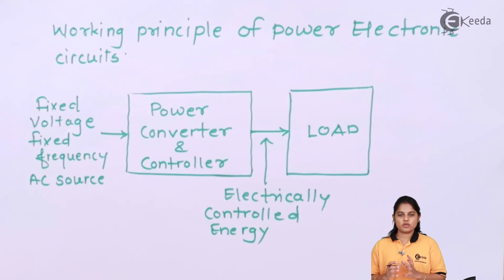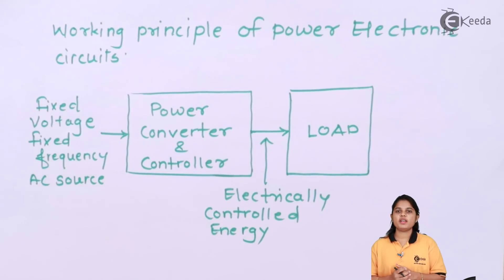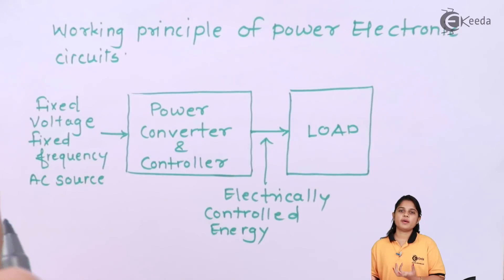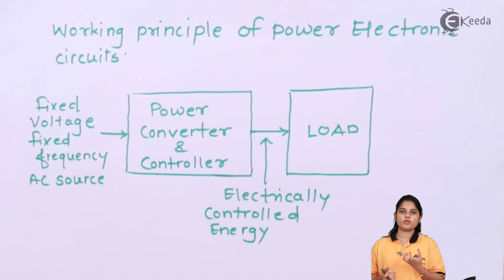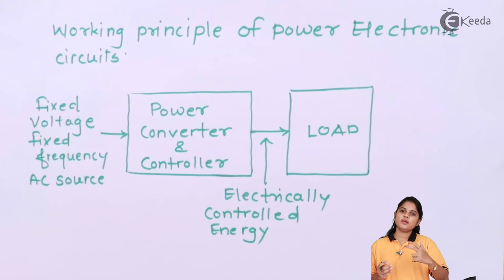This is the basics of power electronics. Now you know what power electronics is. One by one, we are going to see how electrical energy can be generated, transmitted, and distributed. Secondly, we will learn how this conversion takes place — what kind of devices can be used to convert one form of energy into another. The third part is the controlling aspect: how you are going to control a particular device and how you are going to handle the switching of the signal or device. These three major areas we are going to see in the next videos.